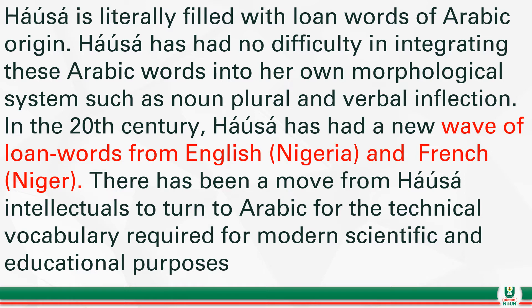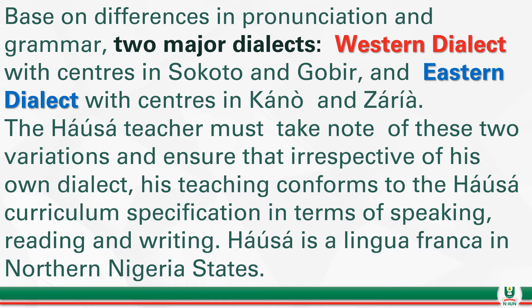Hausa has had no difficulty in integrating Arabic words into its own morphological system. It has had a new wave of loanwords from English in Nigeria and from French in Niger. There has been a move from Hausa intellectuals to turn to Arabic for technical vocabulary required for modern scientific and educational purposes. Based on differences in pronunciation and grammar, there emerge two major dialects: the Western dialects from centers in Kano and Gobi, and Eastern dialects from centers in Kano and Zaria.